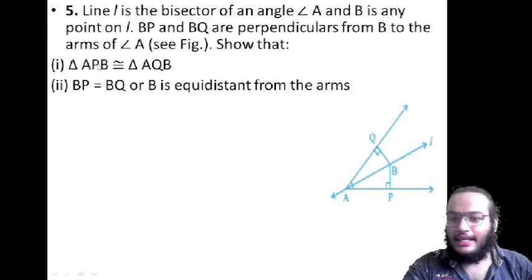Show that: (i) triangle APB is congruent to triangle AQB, and (ii) BP is equal to BQ, or B is equidistant from the arms.